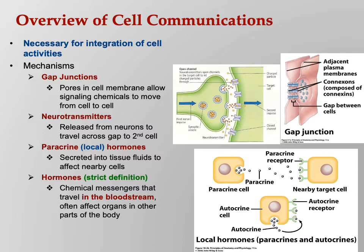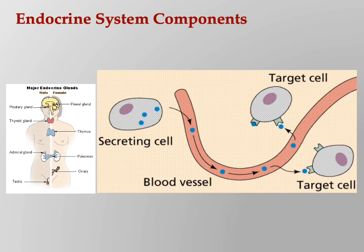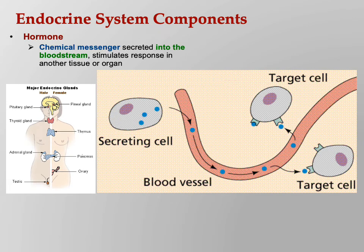Notice the contrast between paracrine and endocrine. Paracrine is local, hormones are long distance. Components of the endocrine system: hormones are the actual chemical messengers. A secreting cell secretes into the blood, it travels long distance to perhaps another part of the body, very far away, leaves the blood, and then has to bind to a receptor there to cause something to happen.